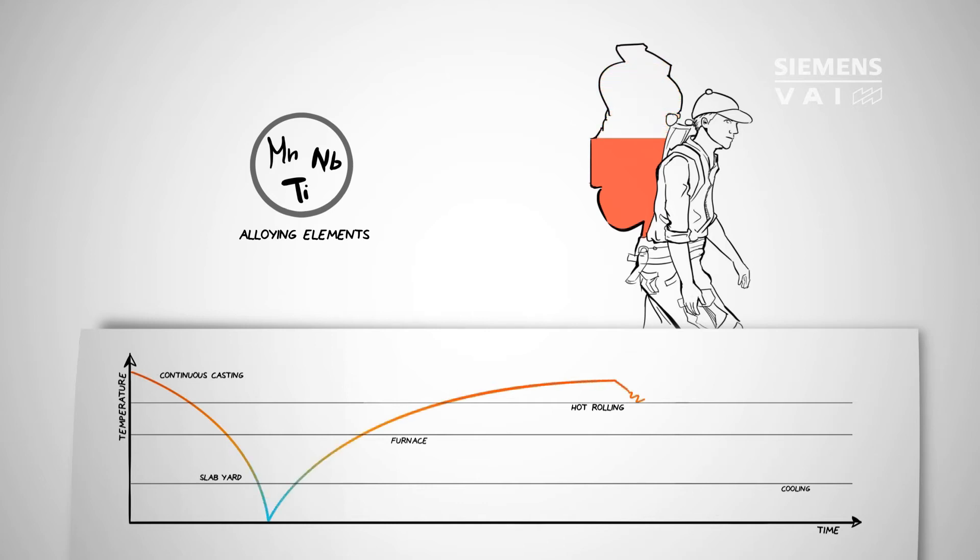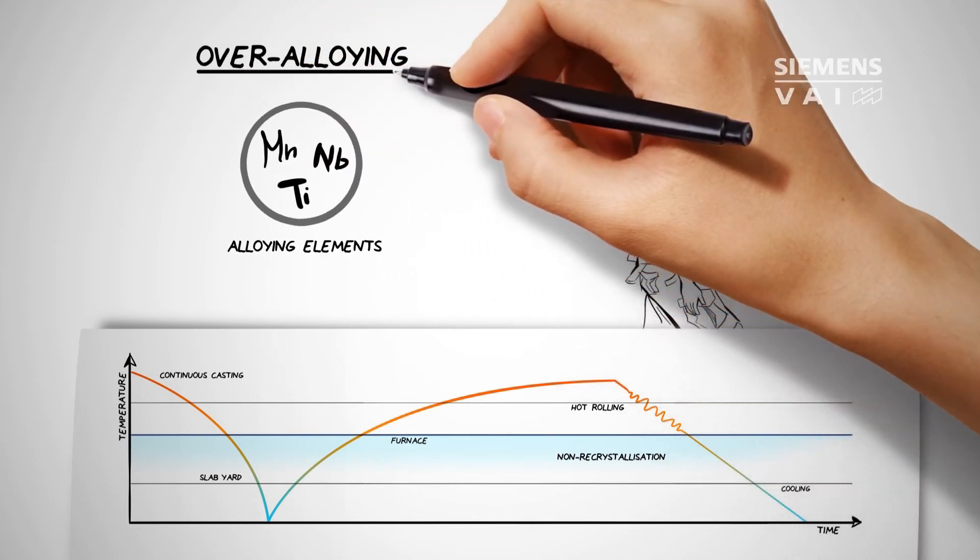In addition, should the temperature fluctuate during slab-by-slab rolling, it's essential that a finishing mill entry temperature below the non-recrystallization level is nonetheless guaranteed. This is achieved by so-called over-alloying, which functions perfectly but unfortunately is a rather expensive way for steel to survive the trip.